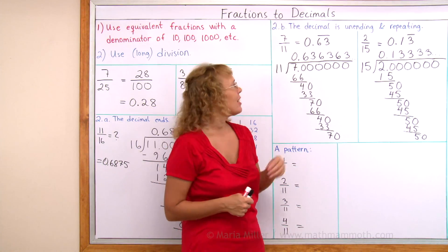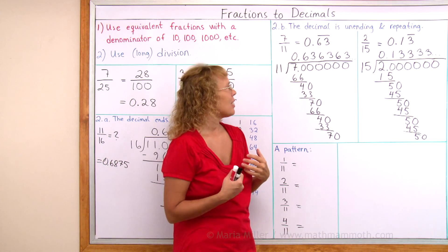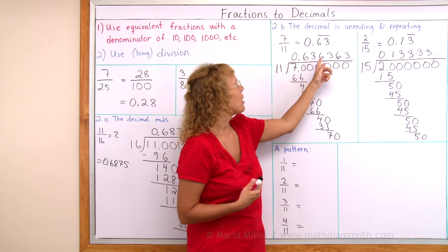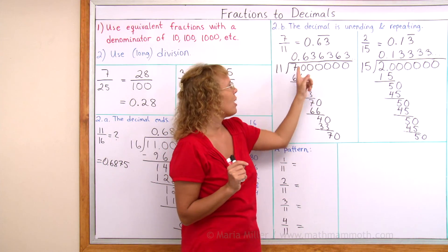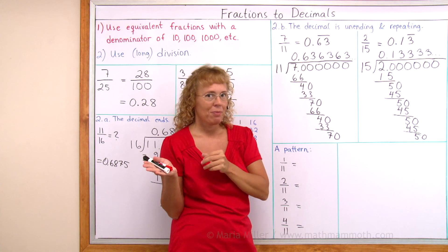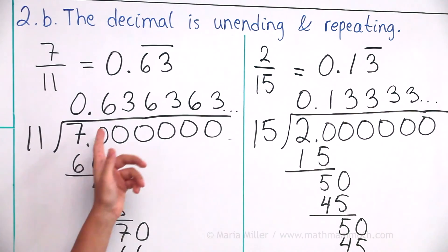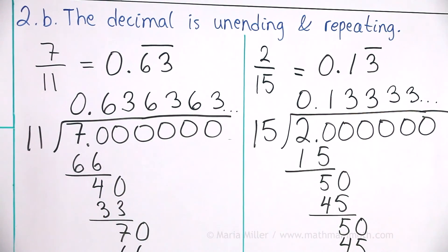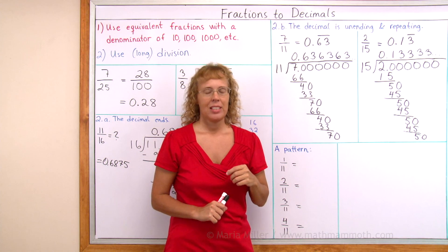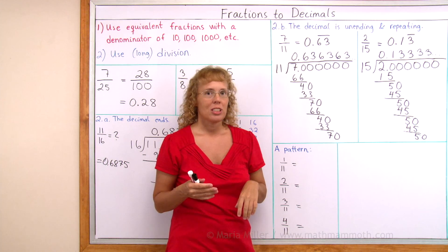Now that you have seen decimals that are unending and repeating, sometimes the repeating part may be 5 or 6 or 7 or 14 digits long. And so if you're using a calculator, you may actually not see it repeat, in which case you may need to just round your answer. And now that you've seen these unending decimals that repeat, the question then arises: would there be any decimals that are unending and that don't repeat? The answer is yes.